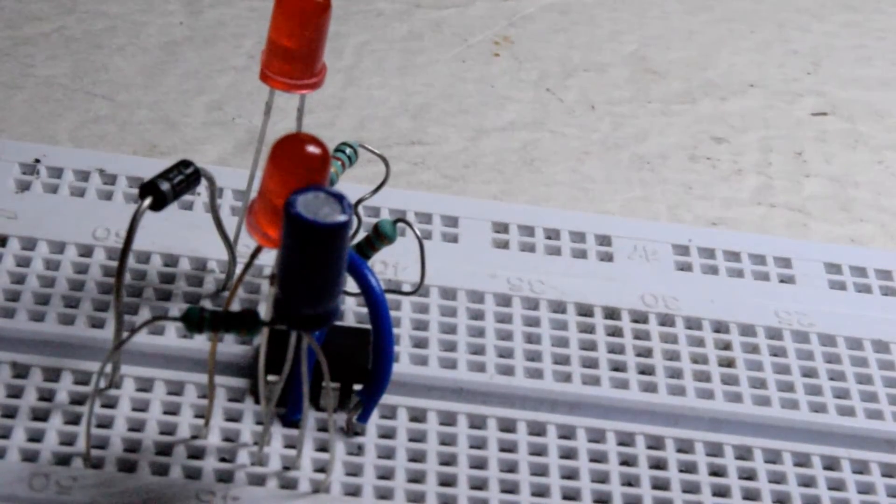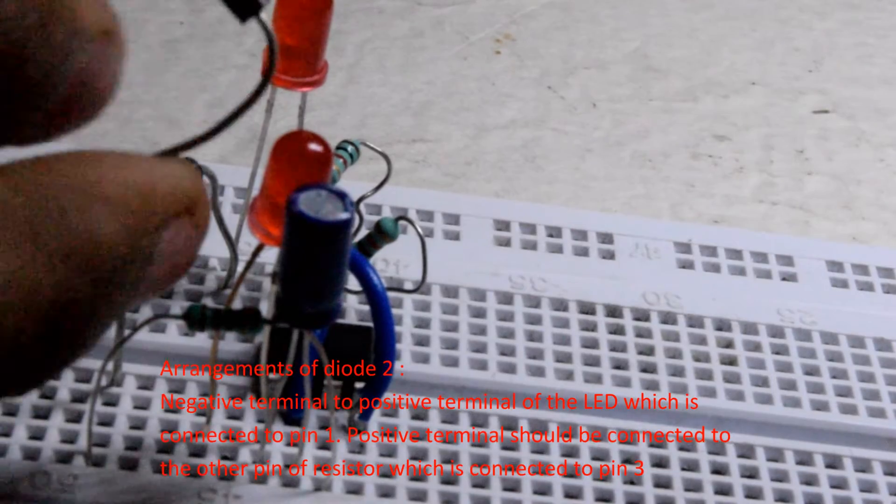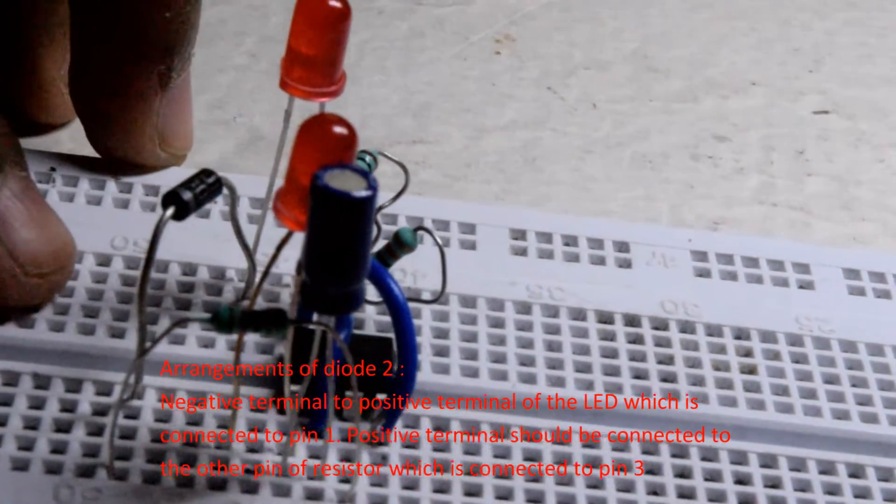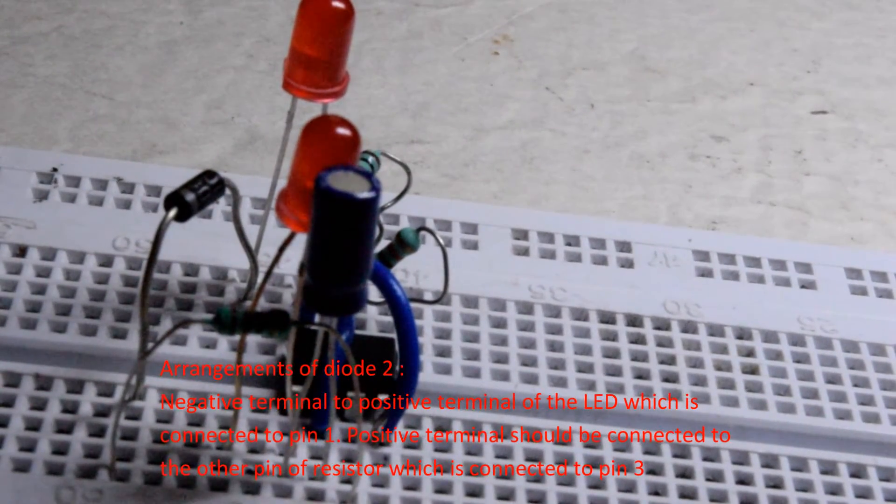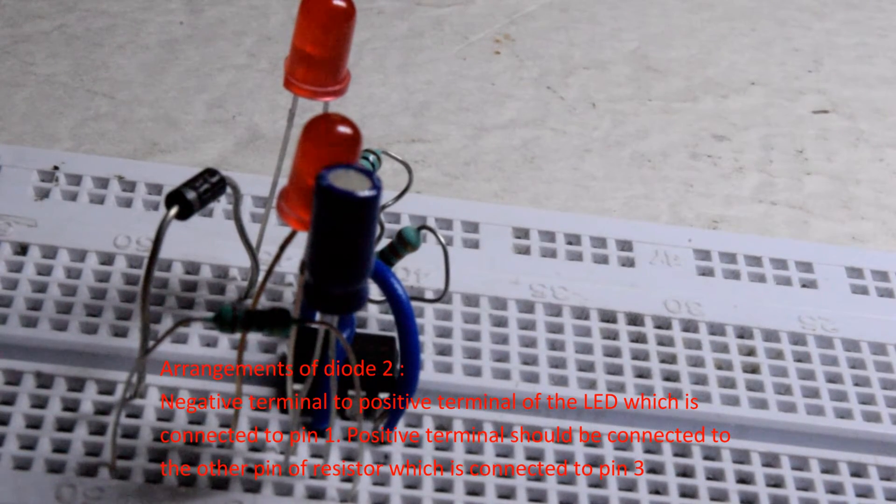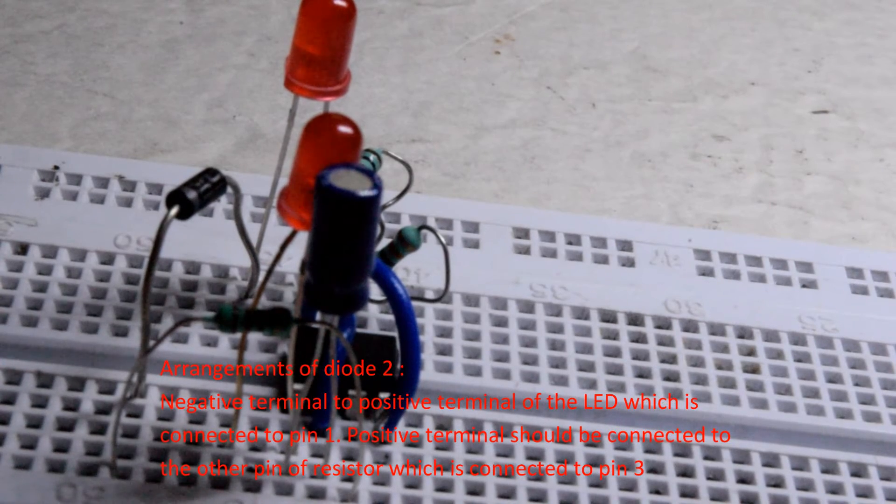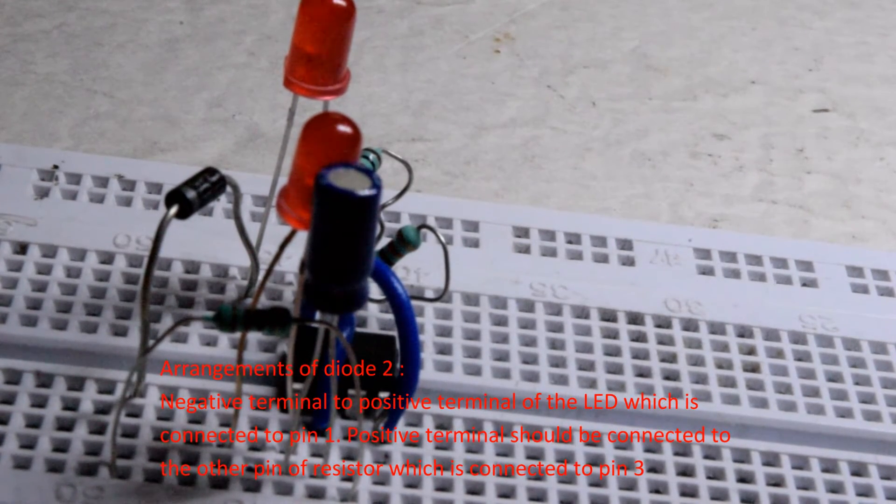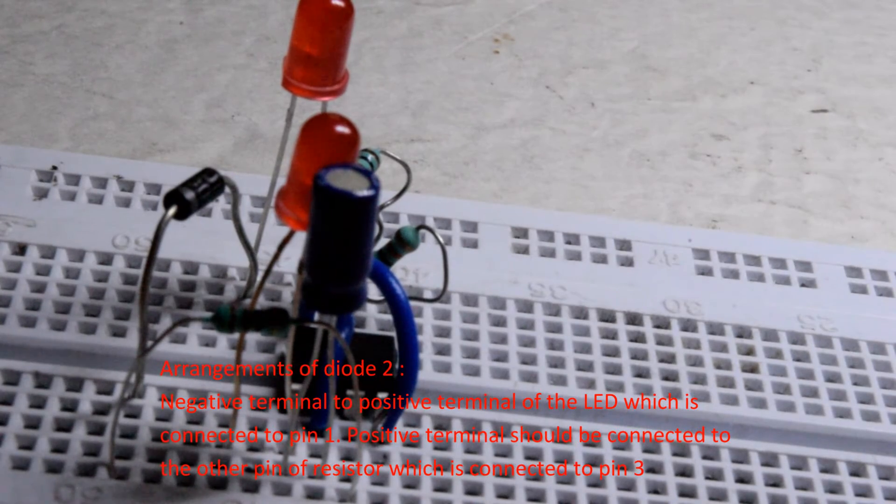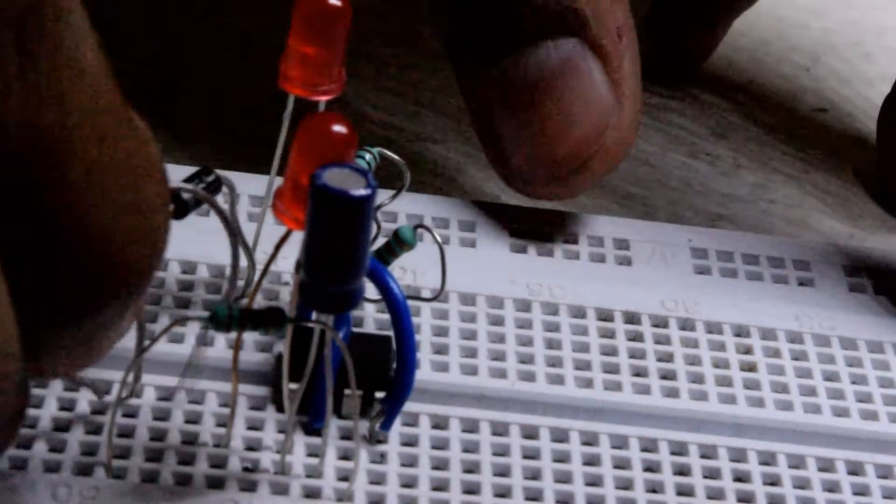Take the other diode and do the reverse. Connect the negative terminal of the diode to the positive terminal of the LED which is connected to pin 1, and the positive terminal of the diode to the other pin of the resistor.